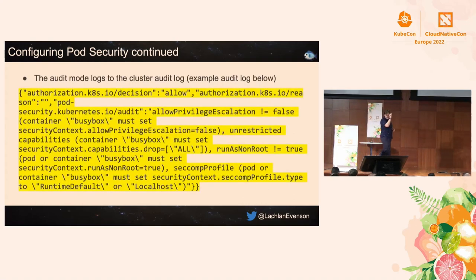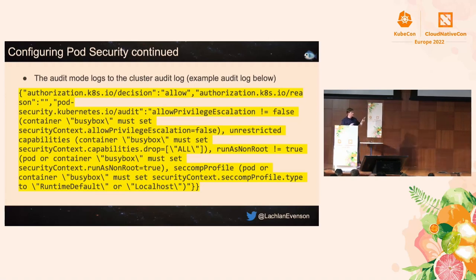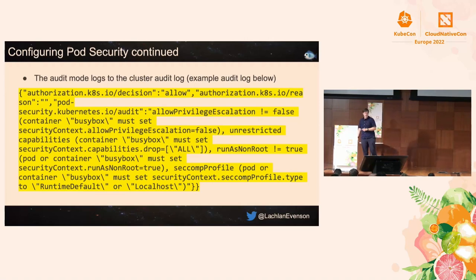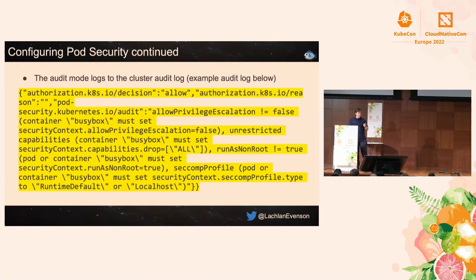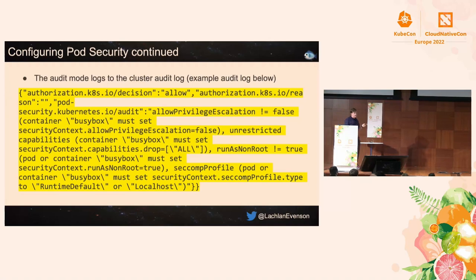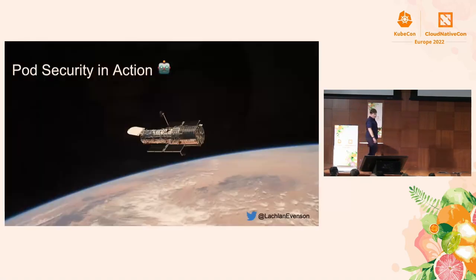What does an audit entry actually look like? If you have audit logging on your cluster, you will see messages like: 'allowPrivilegeEscalation does not equal false for container busybox — it must be set in the securityContext; allowPrivilegeEscalation: false; unrestricted capabilities.' There are a bunch of errors you can see in audit logs. Additionally, pod security publishes Prometheus metrics you can scrape to see which policies are being hit and how often, from your monitoring tool.